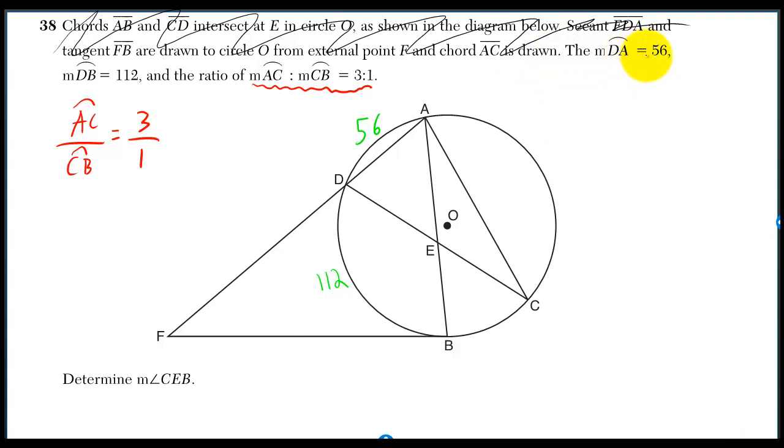They could have also just marked this for us immediately. DA is equal to 56 and DB is 112. But they're dicks, so they didn't.